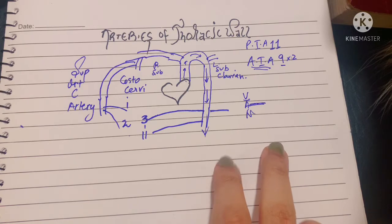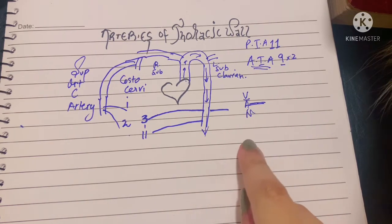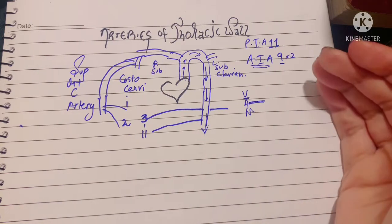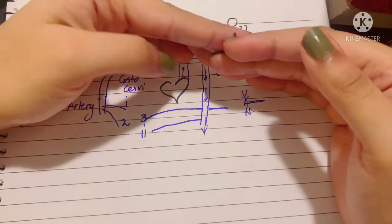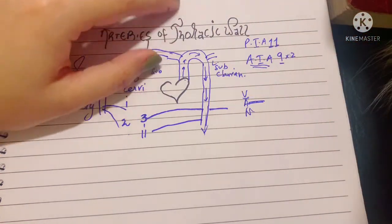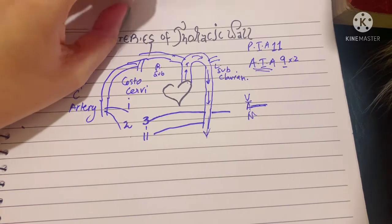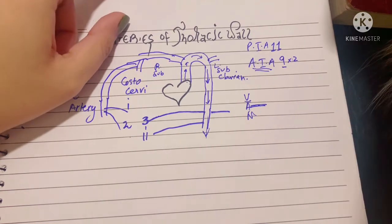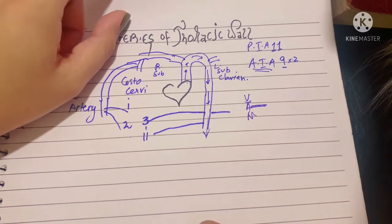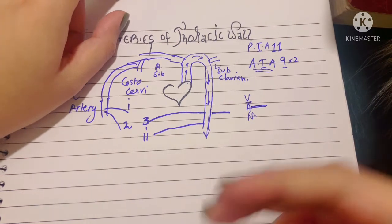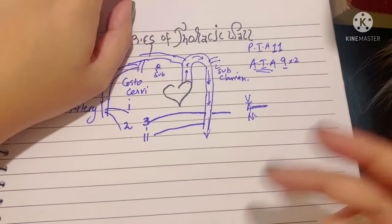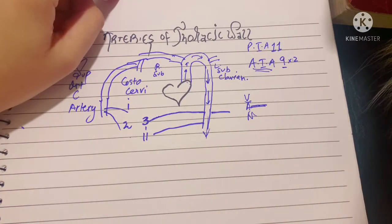The posterior intercostal artery terminates at the costochondral junction — where the rib becomes cartilage — by anastomosing with the anterior intercostal artery. It gives off muscular branches to the thoracic wall muscles, a dorsal branch to supply the back, and a collateral branch that anastomoses with the anterior intercostal artery. There are also mammary branches from the second, third, and fourth arteries that supply the mammary gland, and the right bronchial artery.